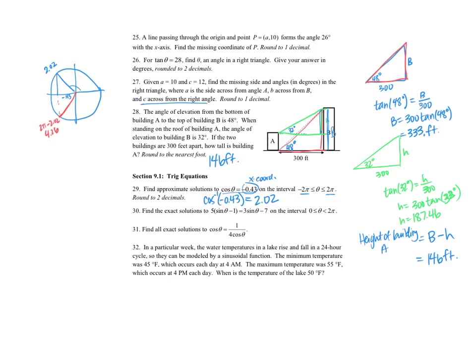I want everything between negative 2 pi and 2 pi. So I have two positive angles: 2.02 and 4.26. Going backwards, the negative counterparts are negative 2.02 and negative 4.26. Those are my four solutions.